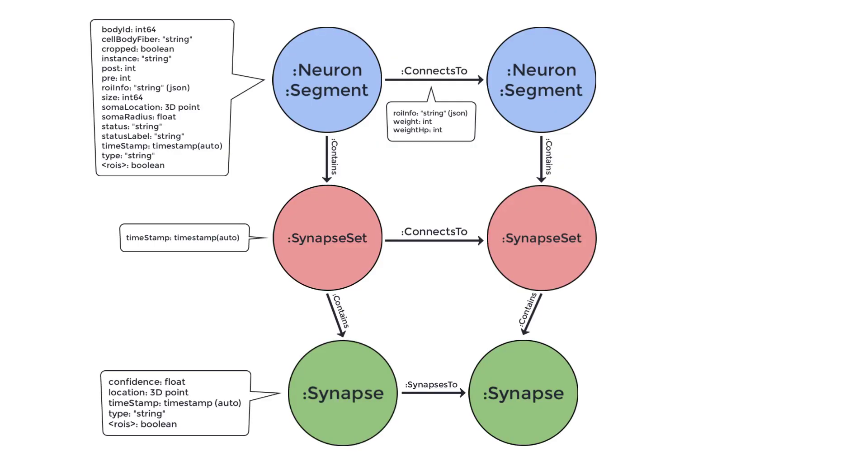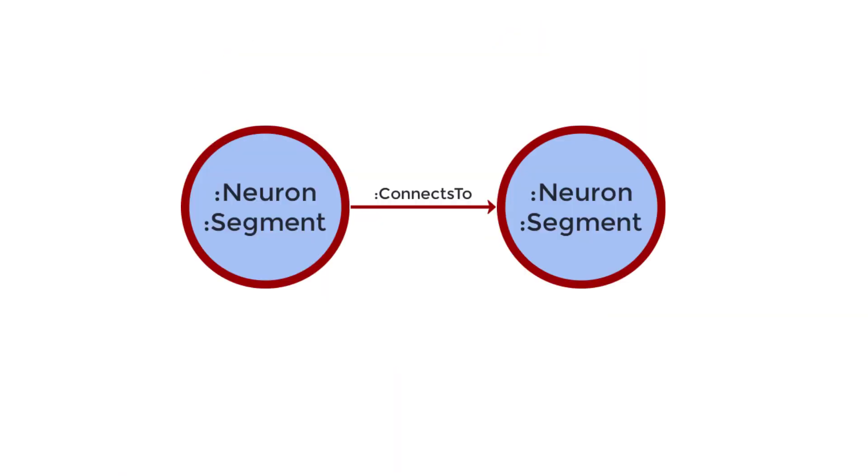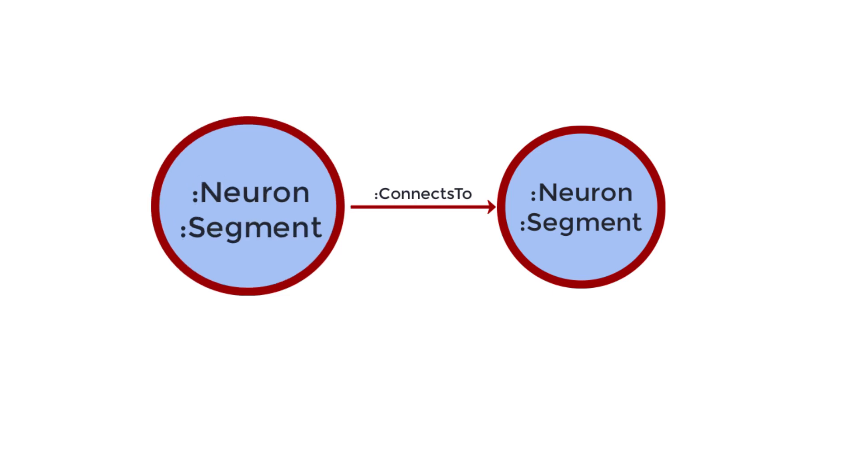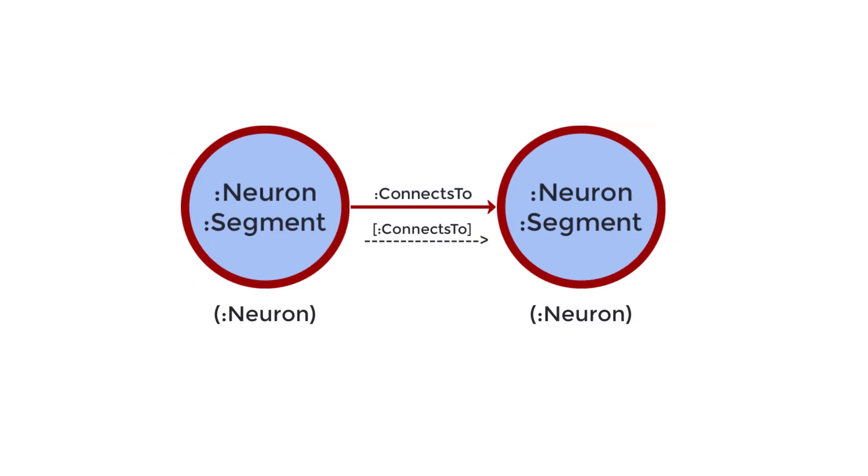If you are interested in connections between neurons, one option is to use this path here. Notice the direction of the arrow between the two neuron nodes. The direction of the arrow represents the direction of information flow, meaning the neuron on the left is presynaptic to the neuron on the right. We can turn this graph into text and then into the match statement.